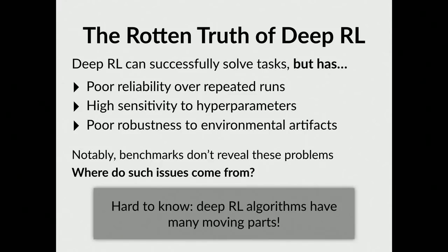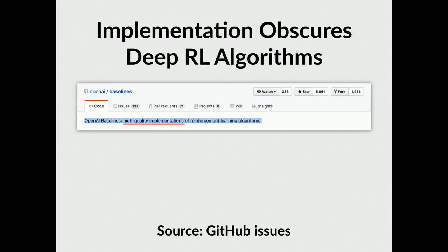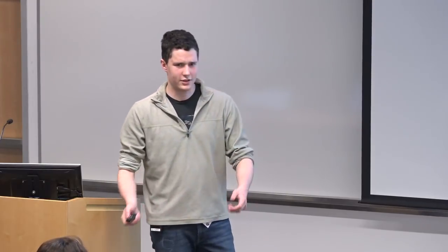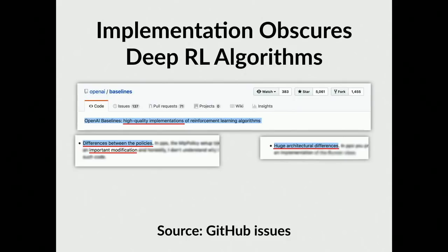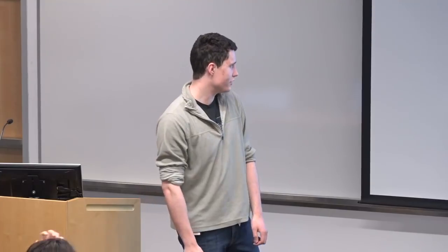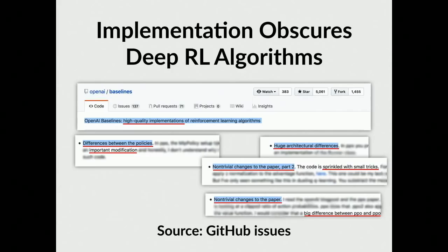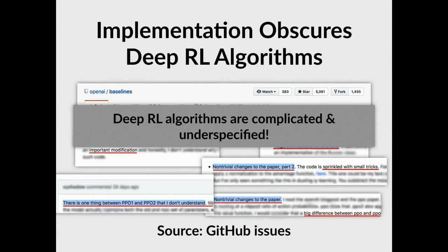The question is where do these issues come from? It's unclear because deep reinforcement learning algorithms are super complicated with tons of moving parts, and it's very unclear how to implement them just from the papers. One example is the OpenAI Baselines repository — it has high-quality implementations of RL algorithms. Looking at the PPO1 and PPO2 algorithms from the PPO paper, there are huge architectural differences between the two implementations, huge differences in the policies, and optimizations not mentioned in the paper at all.